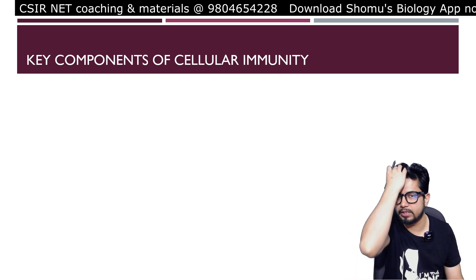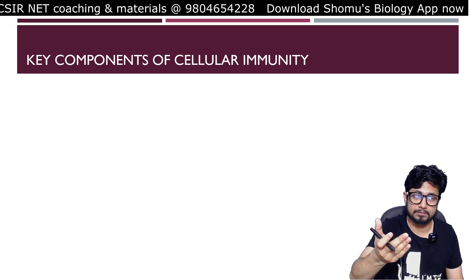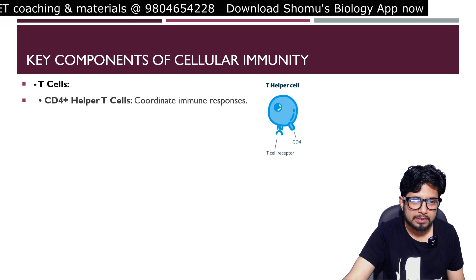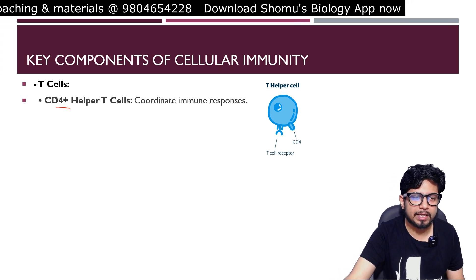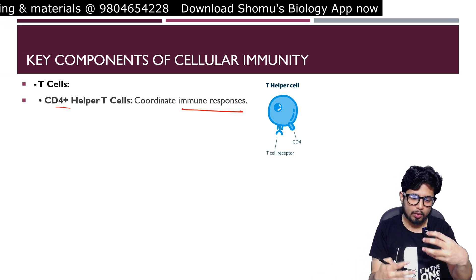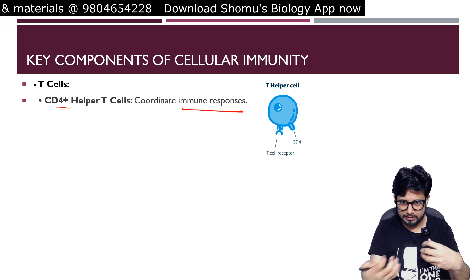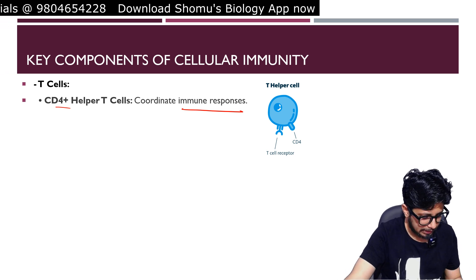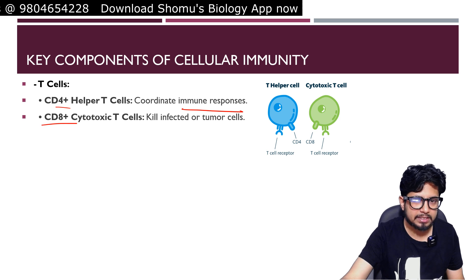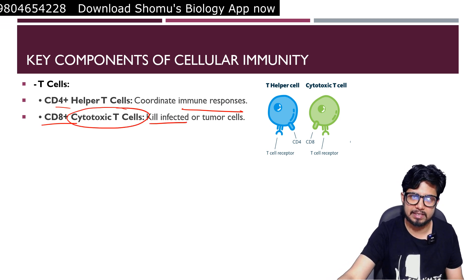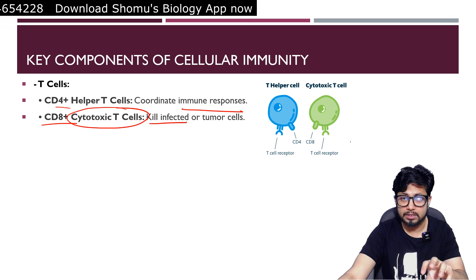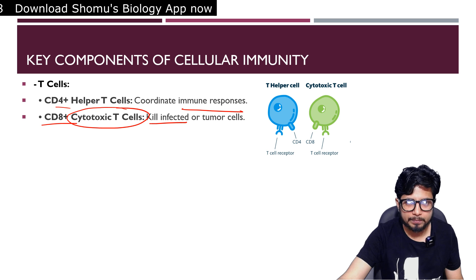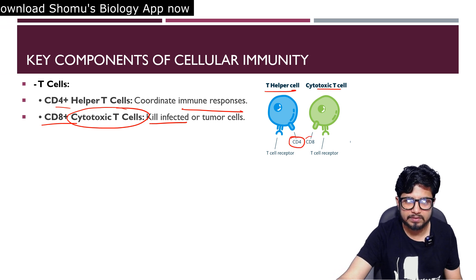The key components of cellular immunity include T cells. CD4-plus helper T cells coordinate the immune response — they interact with B cells and other antigen-presenting cells to enhance immune responses. CD8-plus T cells, known as cytotoxic or killer T cells, kill virally infected cells or cells with tumor properties. T helper cells have CD4 on their surface, while cytotoxic T cells have CD8 on their surface.